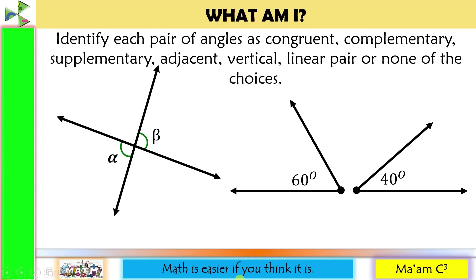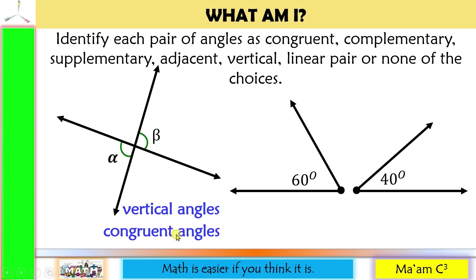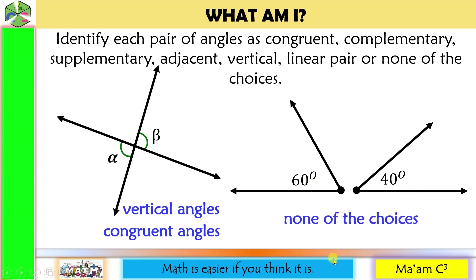Let's have an activity — 'What am I?' Identify each pair of angles as congruent, complementary, supplementary, adjacent, vertical, linear pair, or none of the choices. The first one: they are vertical angles, and since vertical angles are congruent, we also say they are congruent angles. The next one — 60 and 40 — they are not adjacent, not complementary, nor supplementary. Therefore, none of the choices.